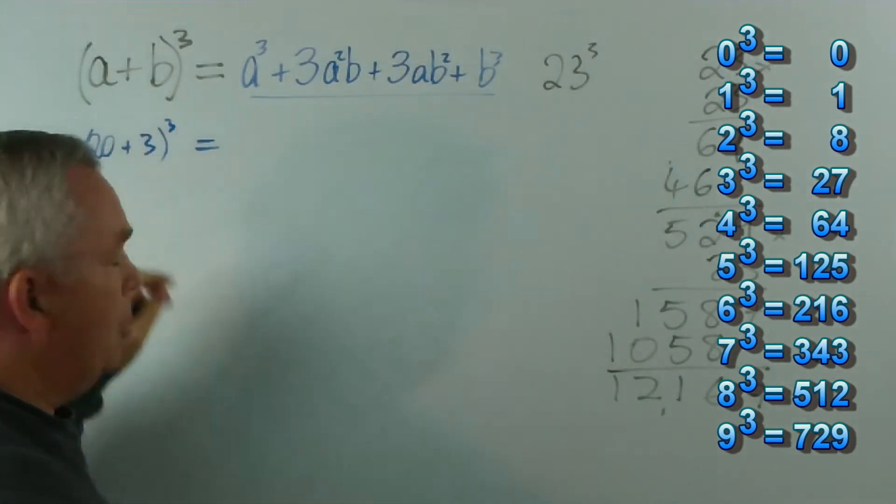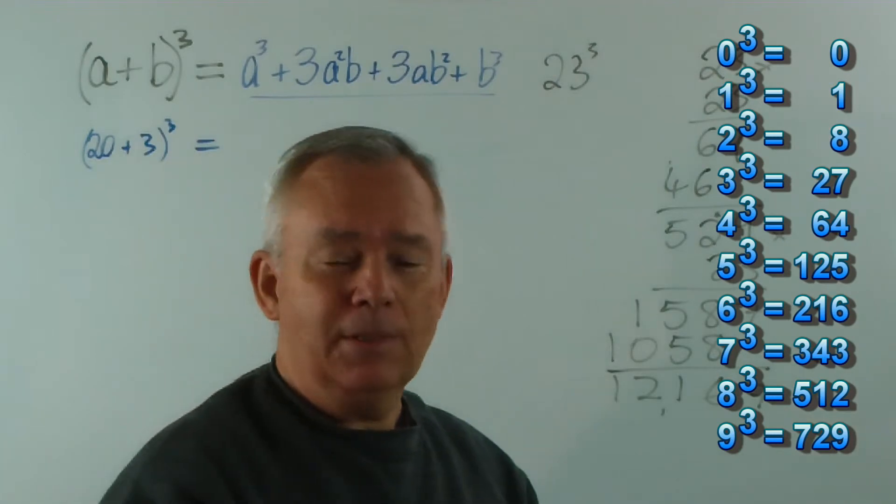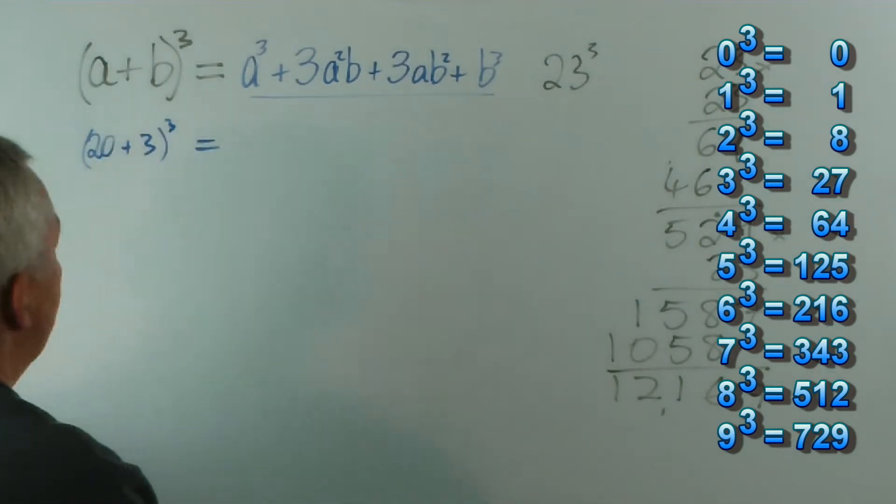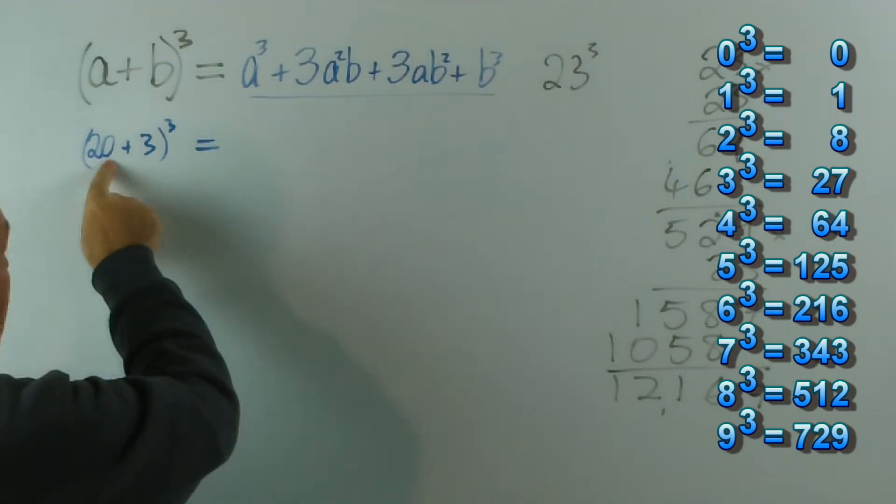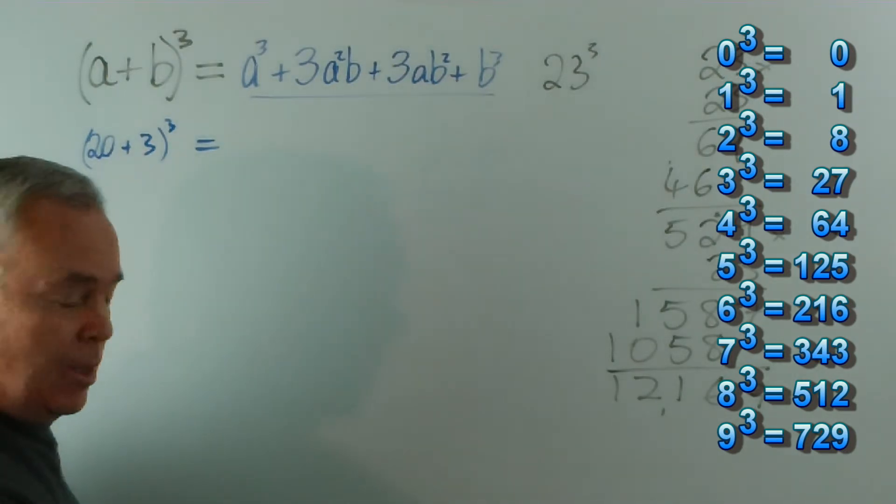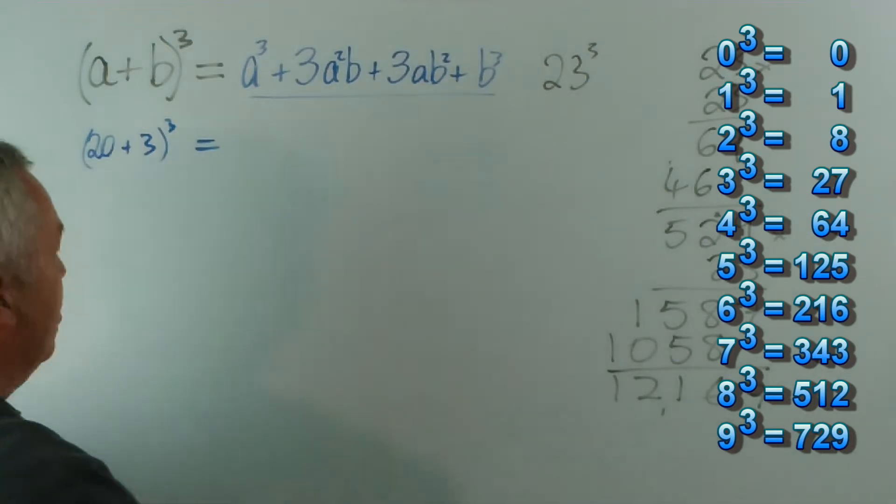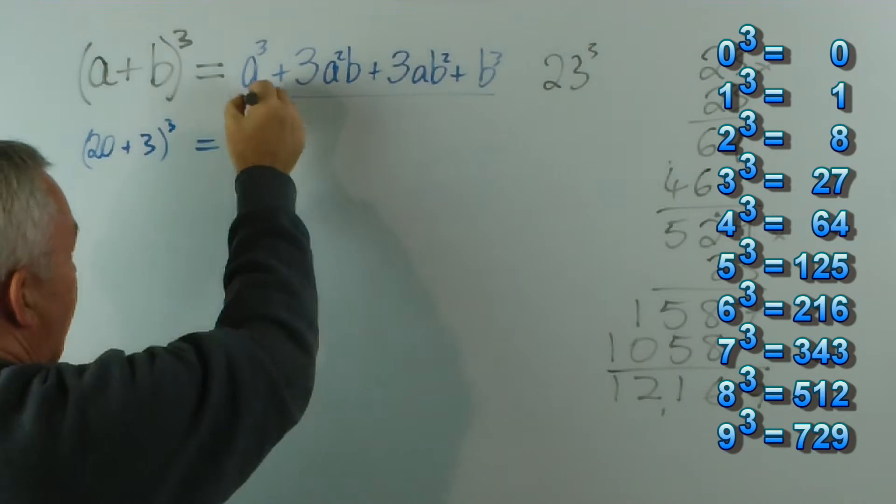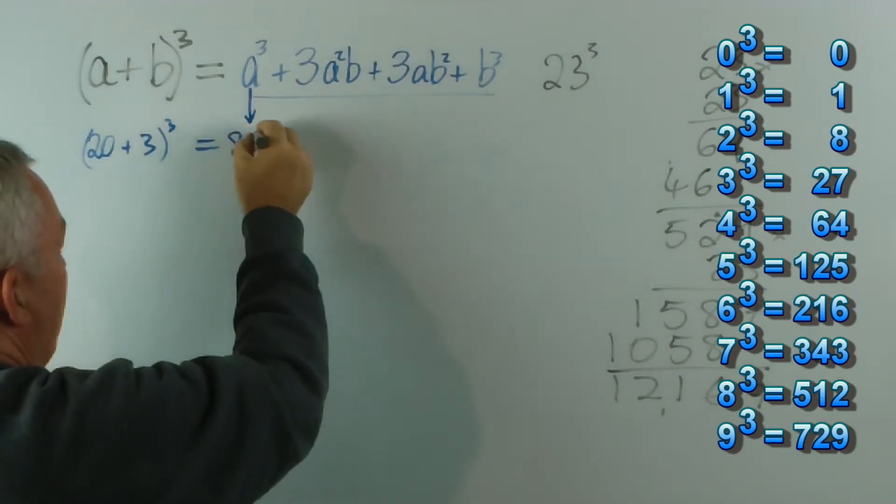Now, what's 20 cubed? Well, you know that 2 cubed is 8. I've told you that it's important to know these cubes. So, 2 cubed is 8. And 20 cubed is going to be 8 followed by three zeros, because 20 times 20 times 20 will have three zeros attached. So, in fact, for this value we're going to have 8,000.